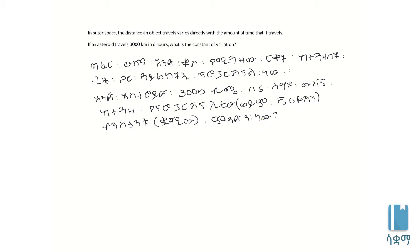To find the constant of variation, we use the directly proportional relationship between distance and time. Since the values are directly proportional, we can calculate the constant of variation from the given values.